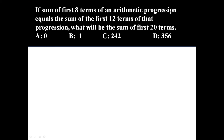The given problem is: if the sum of the first eight terms of an arithmetic progression equals the sum of the first twelve terms of that progression, what will be the sum of the first twenty terms? That is, S8 = S12 — what is S20?